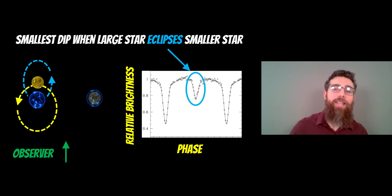The secondary eclipse, the smaller one, is when that smaller star passes behind the larger star. That is our secondary eclipse. And because it's passing behind the brighter star, it's a smaller dip in brightness.